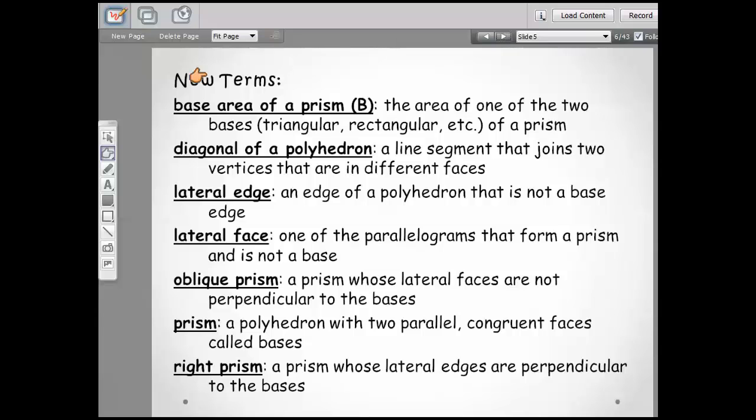Here are some of the new terms: the base area of a prism, diagonal of a polyhedron, lateral edge, lateral face, oblique prism, a prism, and a right prism. Be sure to know all those terms.